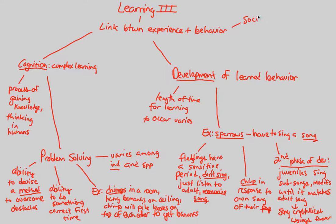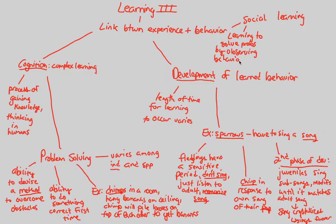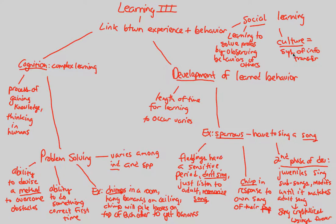Finally, social learning is very important, especially in the human context. It is simply learning to solve problems by observing the behaviors of others. We use the society around us to learn those behaviors. Specifically, social learning operates through culture — which in animal behavior is considered a system of information transfer that allows individuals to solve problems in their own unique way.